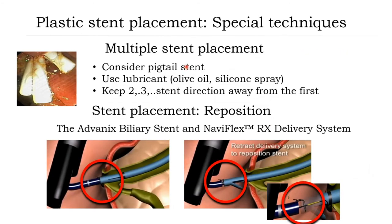There are special techniques to address here. Number 1: Multiple stent placement — consider pigtail stent better than straight stent. Use lubricant, for example olive oil or silicone spray. Keep the second or third stent in a certain direction away from the first one. Number 2: Stent placement is difficult especially for hilar stent placement. In this particular situation, recommend using a repositioning system because if you cannot put stent in, you can exchange the stent while the wire is still in place.